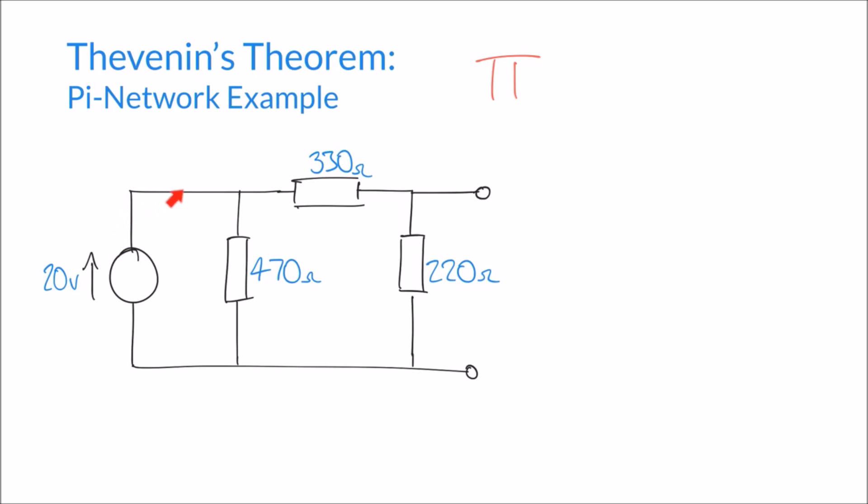There's a current that flows around this loop here through the 470 ohm resistor. And we can also imagine another current loop which flows through the 330, 220 and round like so.